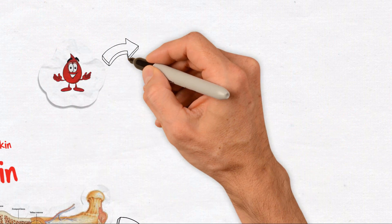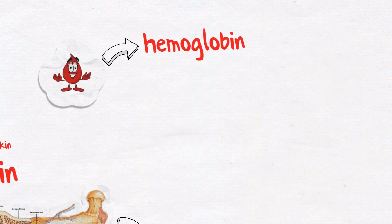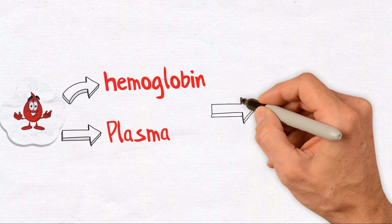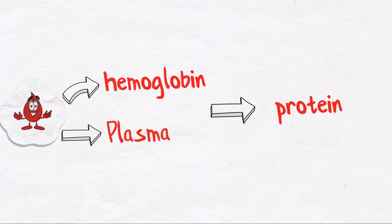Red blood cells contain hemoglobin, a protein compound that carries oxygen throughout the body. Plasma, the clear fluid in blood, contains fat and protein particles known as lipoproteins, which carry cholesterol around and out of the body.